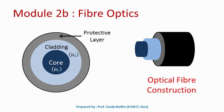The principle on which the working of this optical fiber is based is called total internal reflection. This total internal reflection can be achieved by maintaining the refractive index of core mu1 to be greater than the refractive index of cladding mu2. The diameter of this core is usually of the order of a few micrometers.